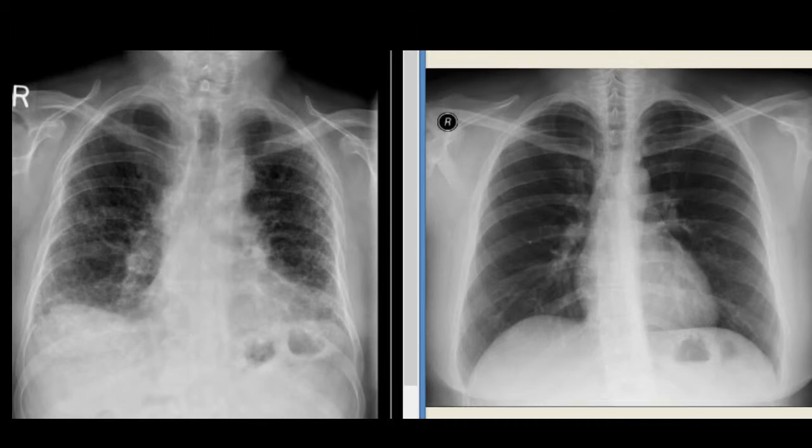The chest X-ray on your left hand side is an AP view. You can immediately notice decreased lung volumes on both sides, but it is more intense on the left side. The trachea is not only dilated but is also slightly shifted towards the left side, as if something is pulling it toward the left.